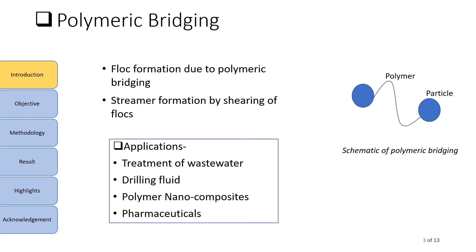Now coming to the question how streamers are formed. It is suggested that the mechanism of polymeric bridging governs the phenomenon of streamer formation. According to this mechanism, a single long chain polymer molecule can adsorb on two or more particles and act as a bridge to draw them together, as shown in this schematic. Such successive bridging leads to flocculation of particles, which upon subsequent shearing gives streamers.